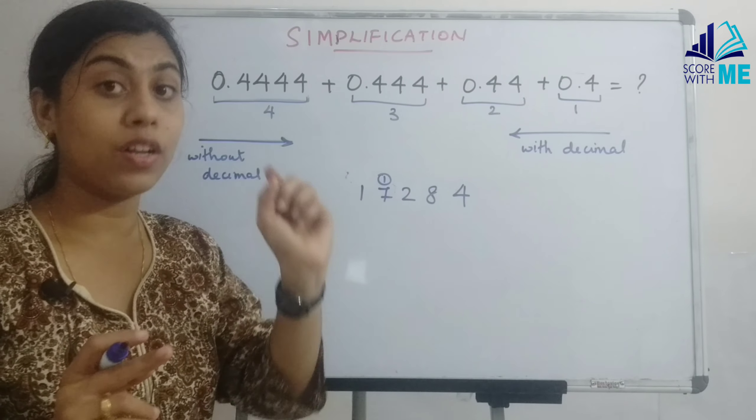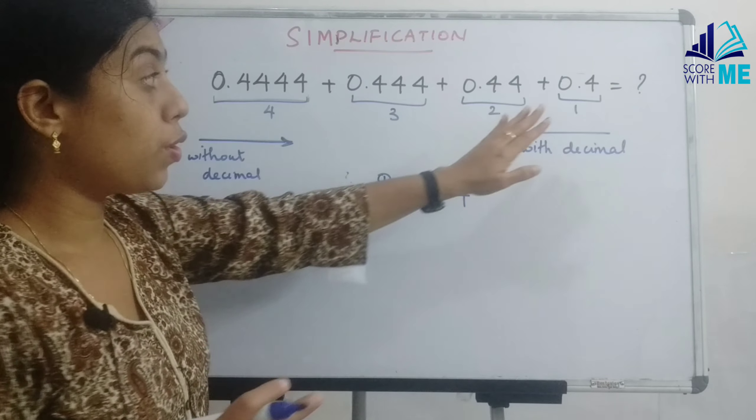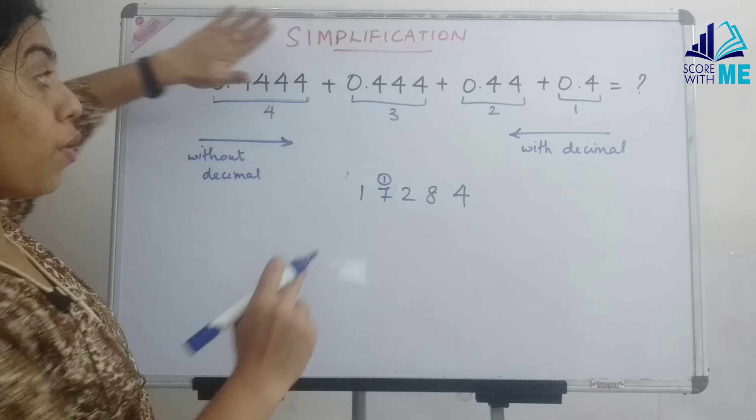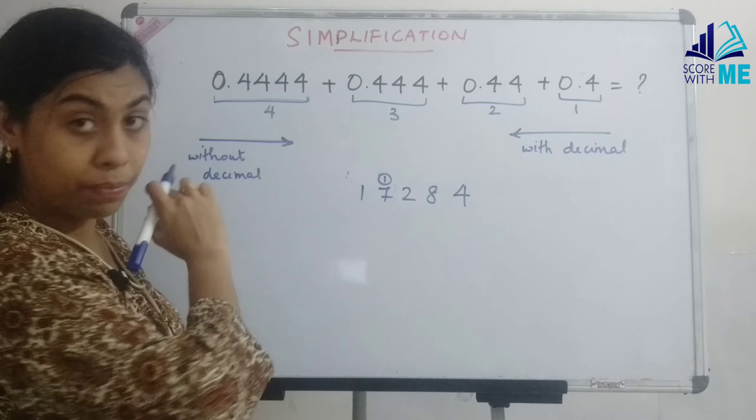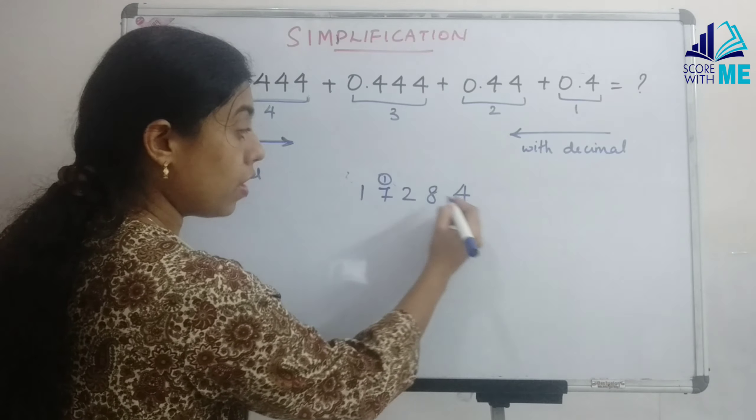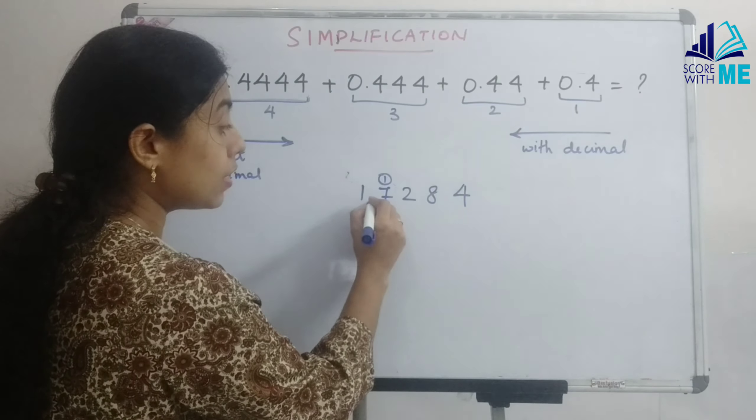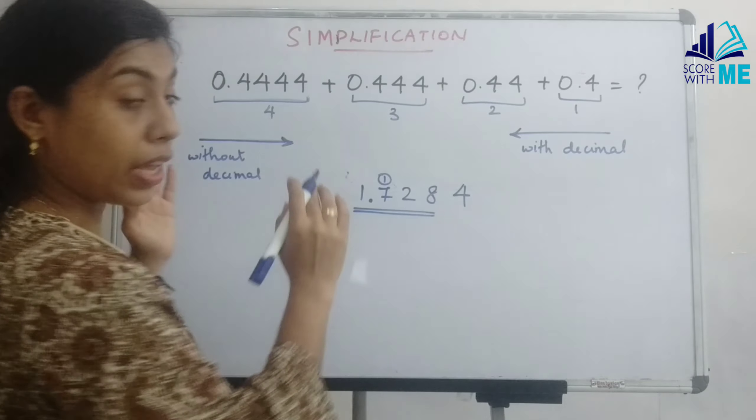But remember, we had got decimals. So what are we going to do? We need to see the highest number of decimals. We have got 4 decimal places. So starting from the right, 1, 2, 3, 4. Answer is 1.7284.